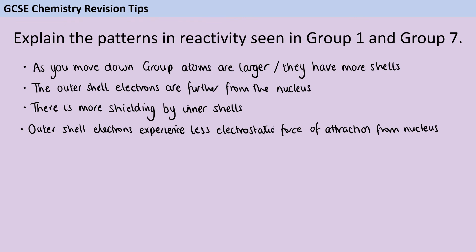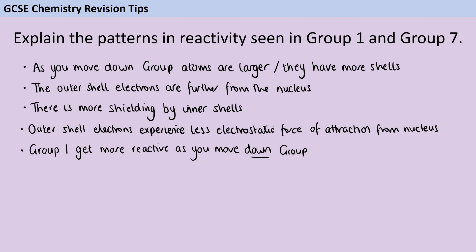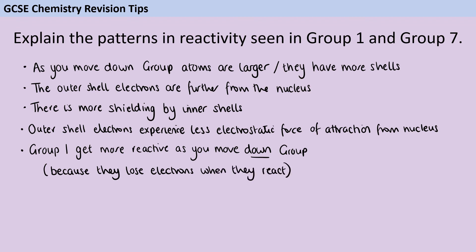This is going to have a different impact when we look at group one and group seven. Group one are metals, and when their atoms have chemical reactions, they lose outer shell electrons. So as we go down group one, the elements become more reactive. The reason for that is that it's easier to lose an electron when it's further away from the nucleus, experiencing more shielding and less of that electrostatic force.